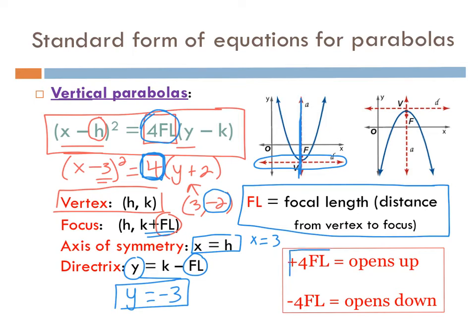If you have a positive focal length — a positive coefficient in front — the parabola opens upward. If you see a negative coefficient, it flips downward. Remember, the focus is always inside the parabola regardless of orientation.